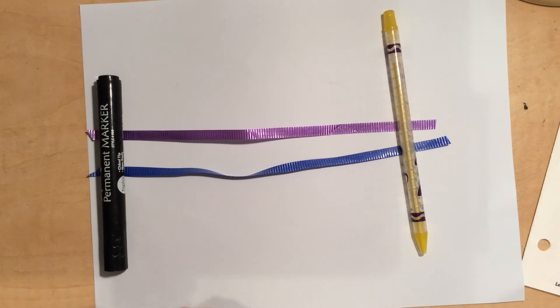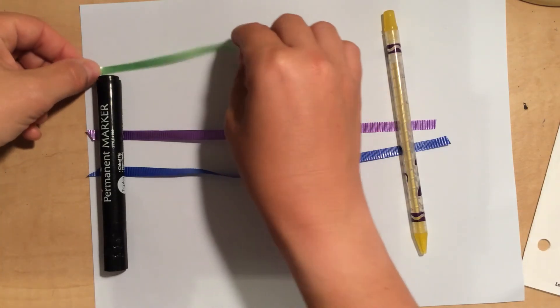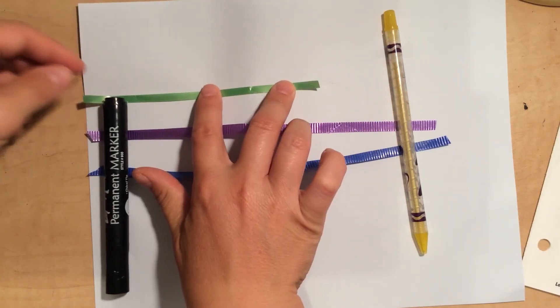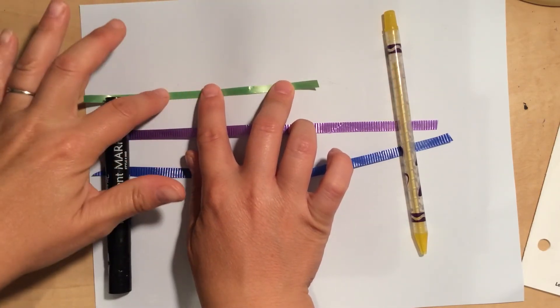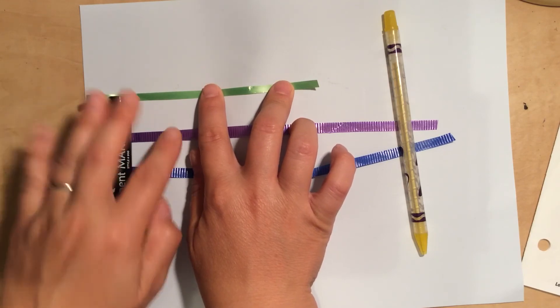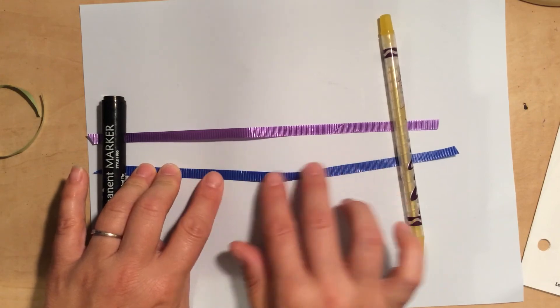And then we're going to take the green one. I think the green is going to be the shortest. What do you think? Oh yeah, there it is. So this one's the shortest. This one's the next longer one. And then this one is the longest.